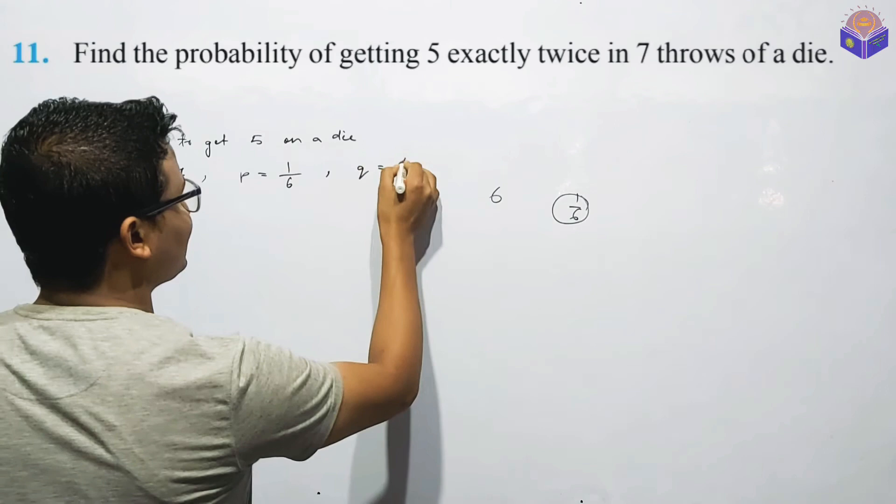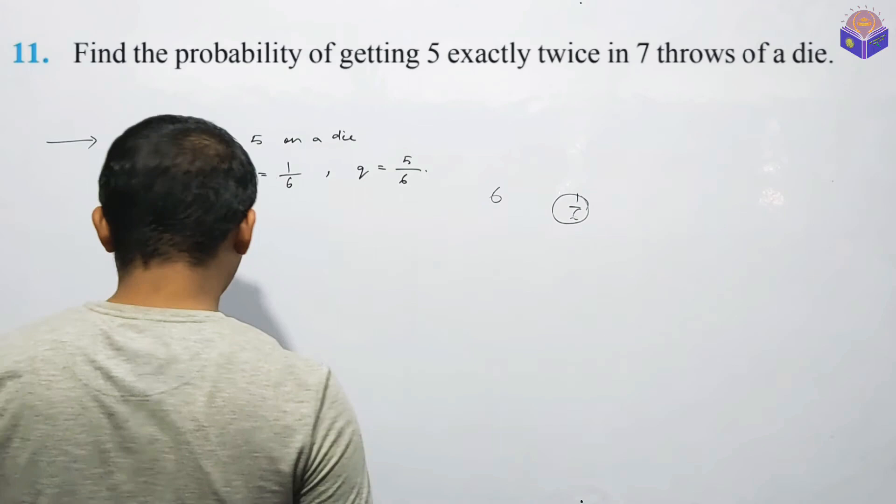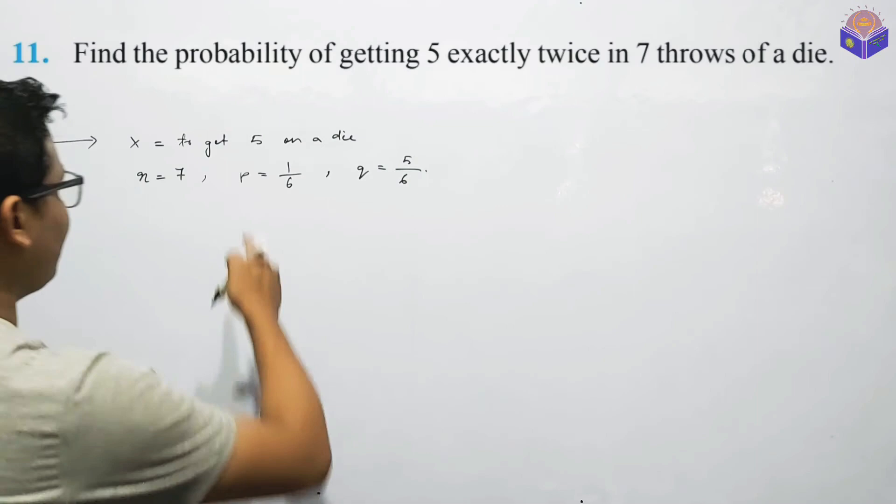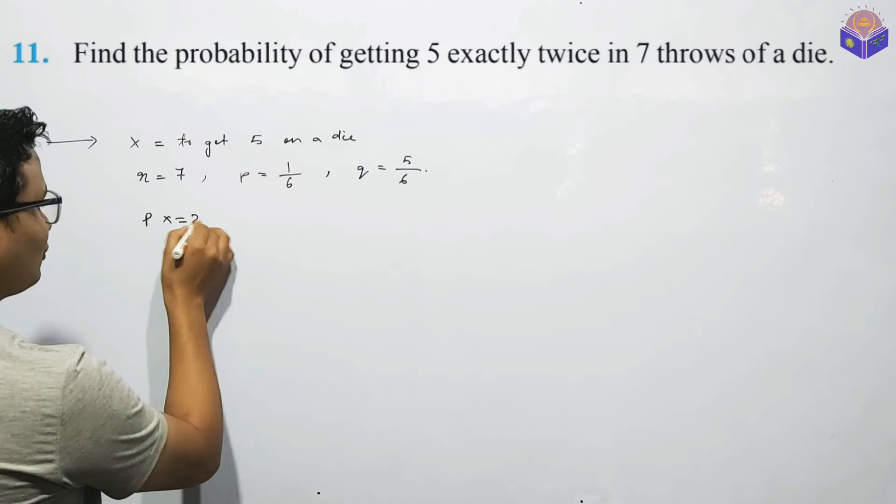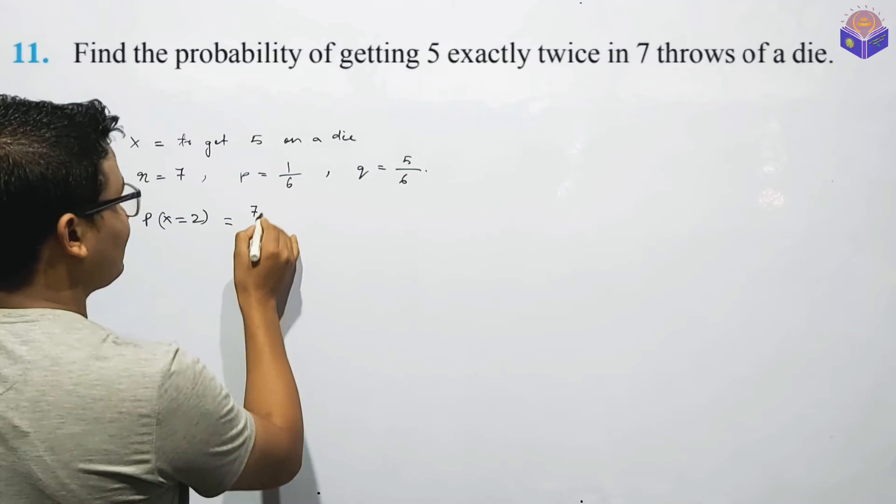If you have 3 times, 1 minus 1 by 6 is 5 by 6. So it is a success and failure. If you have 5 times, the probability means P of X equals 2. 5 times, you can see that probability. If you have 3 times, the total number of trials is 2. It is a success.